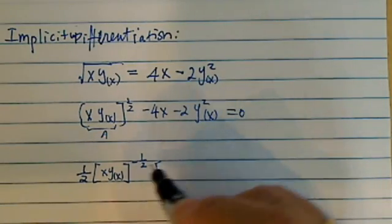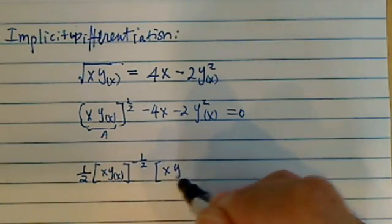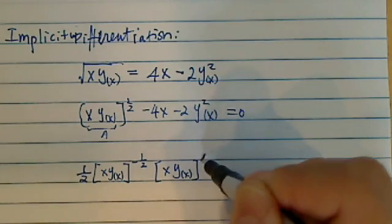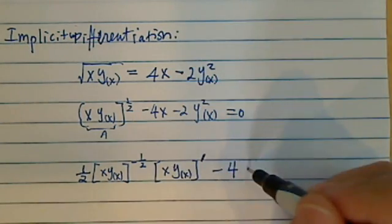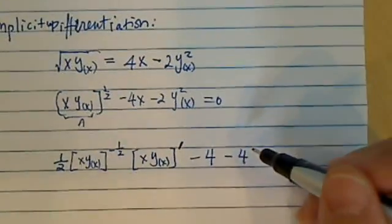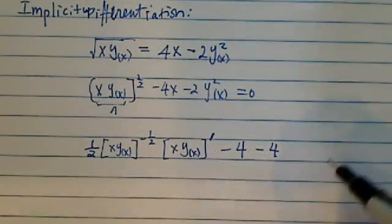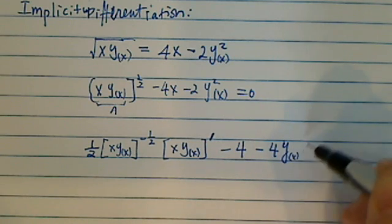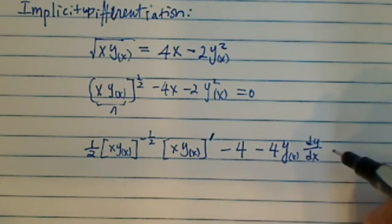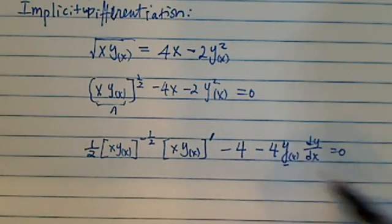And then you're going to find a derivative of xy to the x derivative. Minus 4, this is easy. And then minus 4 times y of x and then dy/dx. Use a chain rule as if this one is a function of x.